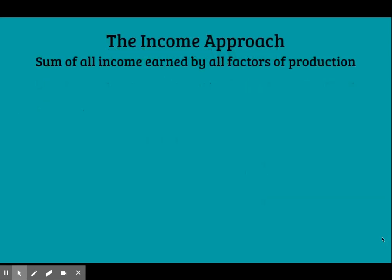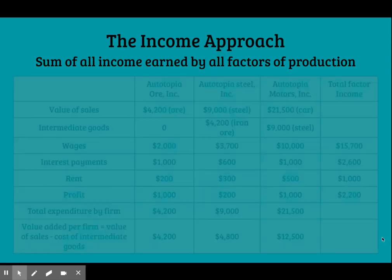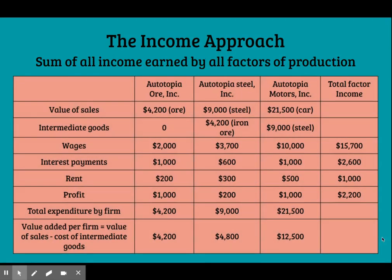Let's return to Autotopia to see how GDP is calculated using factor payments. These four rows here show the factor payments that are made to households who sell their resources to the firms in the economy. If we add up the value of all the wages, interest payments, rent, and profit paid for the use of those resources, we get a total value of $21,500.